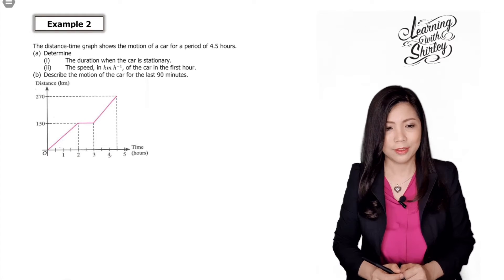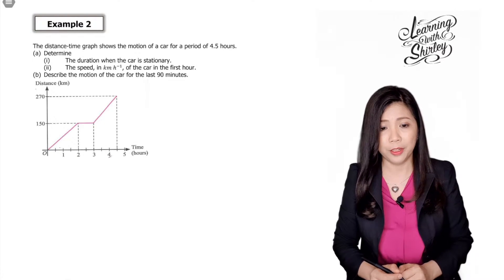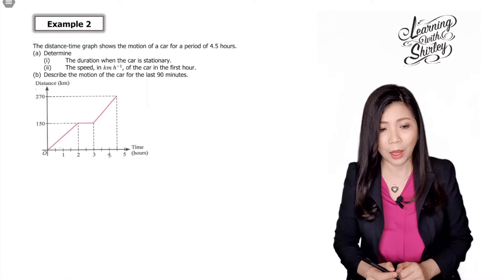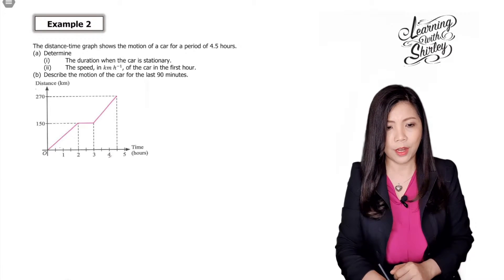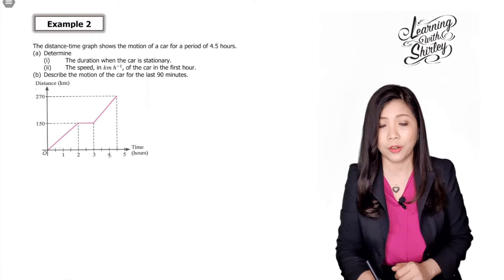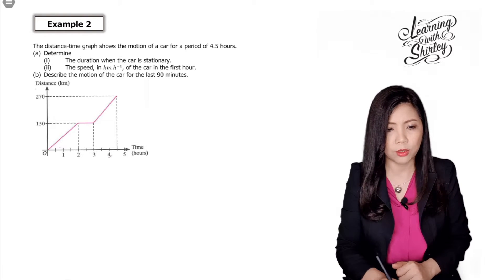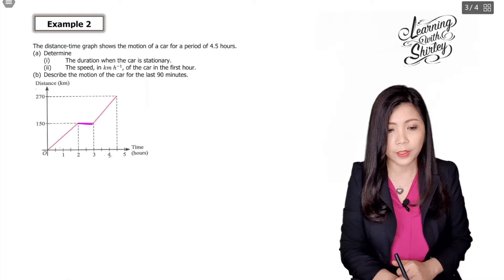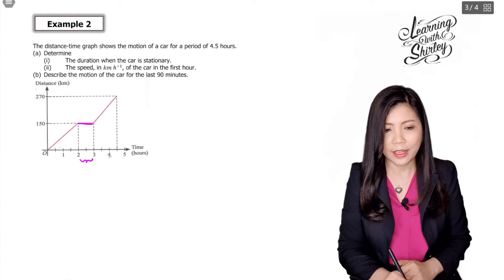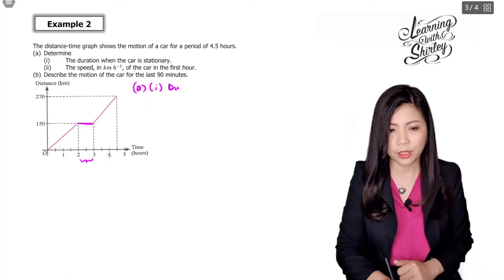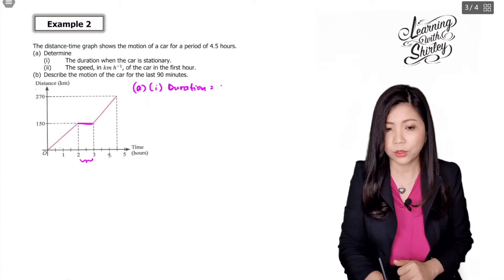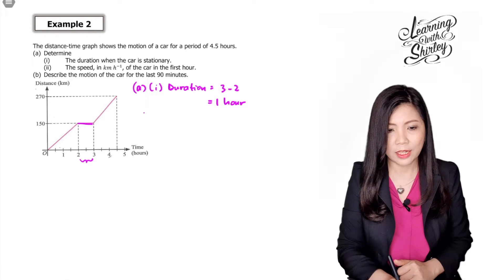Let's look at example number two. The distance-time graph shows the motion of a car for a period of four and a half hours. Part a: determine the duration when the car is stationary and the speed in the first hour. The horizontal line is the stationary section. The duration is 3 minus 2, which equals 1 hour.